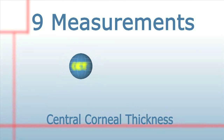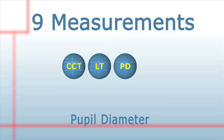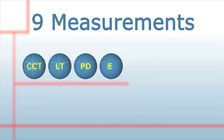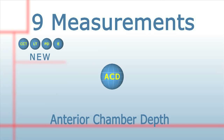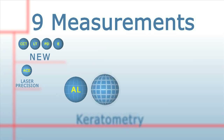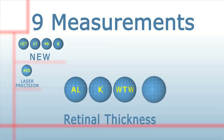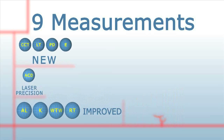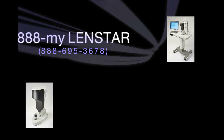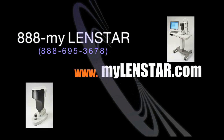Lens thickness is instantly and accurately measured with the other eight LensStar measurements. It's a new but critically important measurement, never captured before with optical biometry. It's measured instantly, painlessly, and accurately, giving you full control of the data electronically. If you want no compromises with premium IOLs, LensStar will give you the edge. Call 888-MYLENSTAR or visit myLensStar.com to learn more or to arrange a demonstration to see for yourself how LensStar can provide immediate value in your practice.